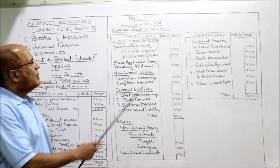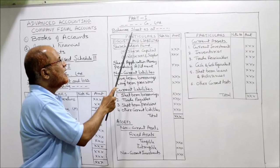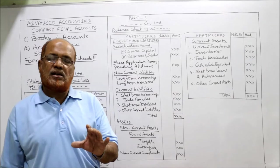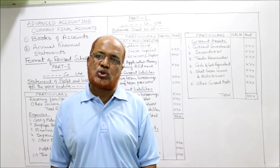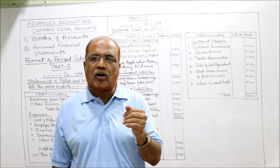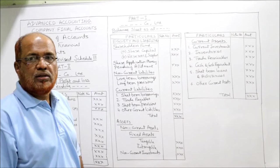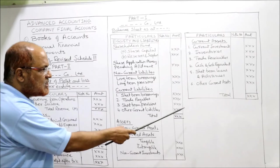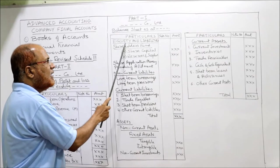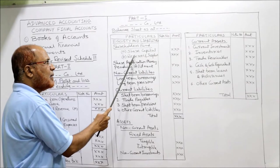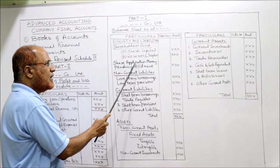Now we come to the balance sheet, Part 1. The heading is: company name, balance sheet as at the relevant date. The format includes columns for particular, note number, and amount. The balance sheet is prepared in a concise manner, with details provided in notes which form part of the financial statements. Under equity and liabilities, first we write shareholders' fund. Under shareholders' fund: share capital and reserves and surplus. Next comes share application money pending allotment.